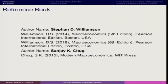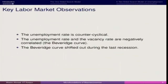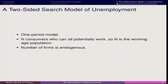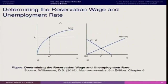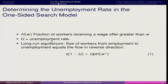The reference remains Williamson and Sanjay K. Chug's book. Going back to where we were: in the long-run equilibrium, people moving from employment to unemployment are represented by S·(1−U), and people moving from unemployment to employment are represented by the corresponding expression.